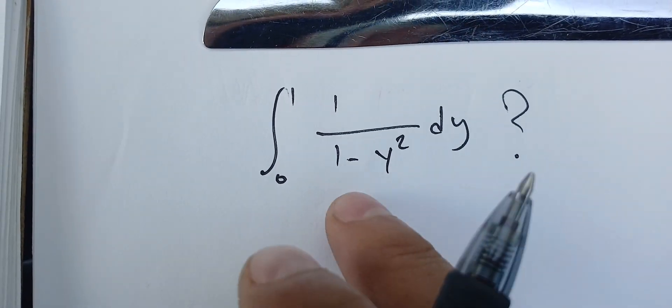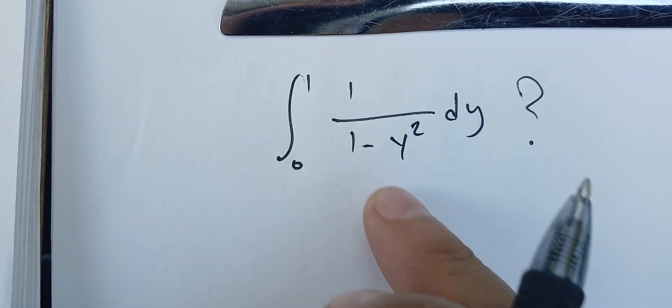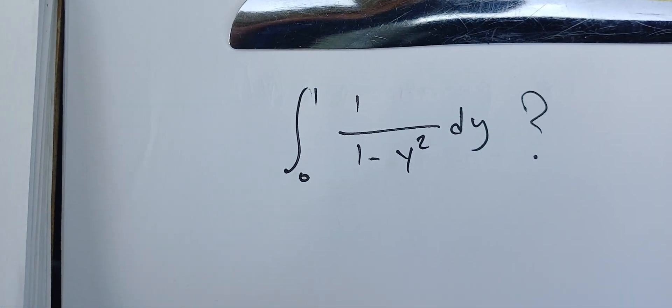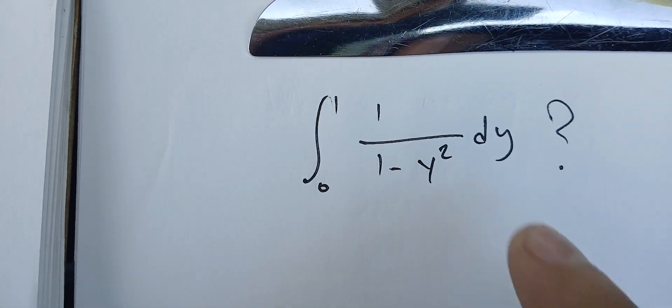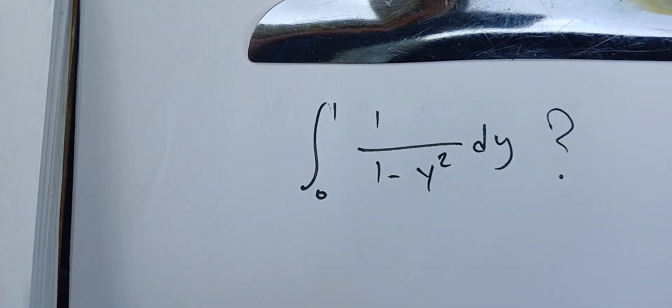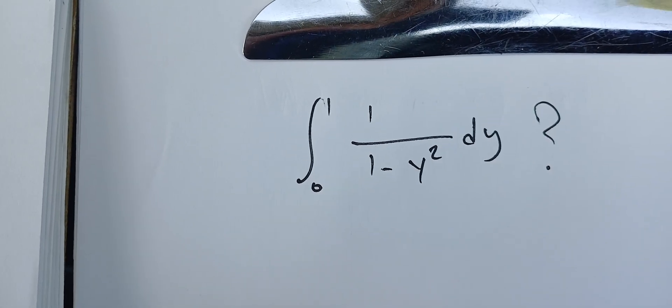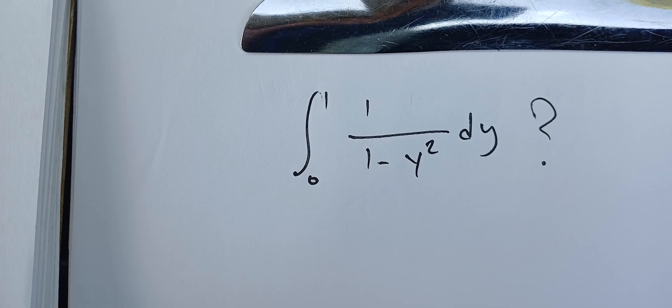Okay, welcome back. We want to find if we can deal with this integral. So this integral has a problem in one. One is one of the boundaries, therefore this is an improper integral of the second kind.